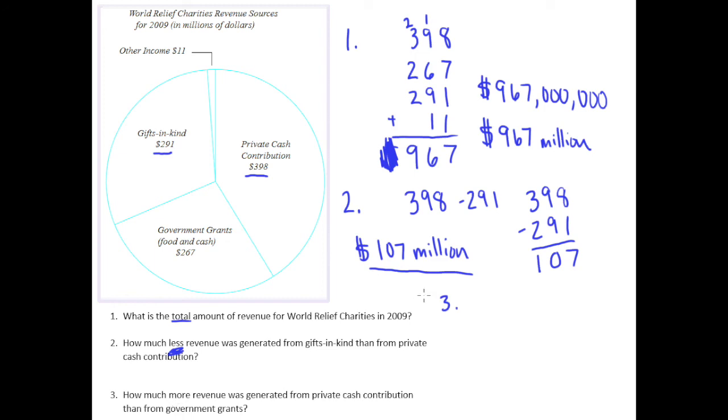So here we have this 398 again minus this time 267, and so we'll be subtracting these vertically. 8 minus 7 is 1, 9 minus 6 is 3, 3 minus 2 is 1.